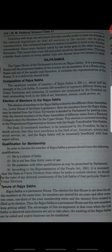Composition of Rajya Sabha: the maximum number of members is 250. It consists of 238 members representing different states and union territories, and the remaining 12 members are nominated by the President for their outstanding work in the fields of art, literature, science, social service, etc.